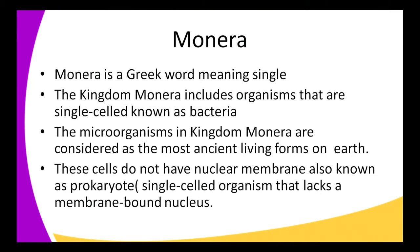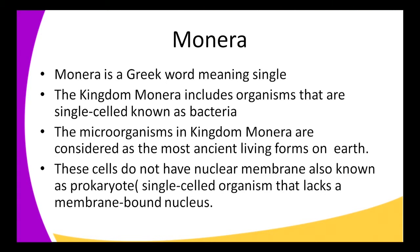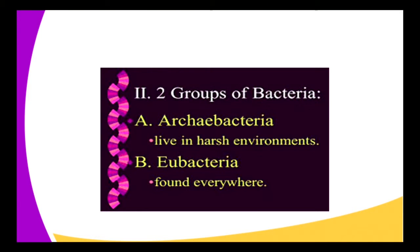The microorganisms in Kingdom Monera are considered the most ancient living forms on Earth. These cells do not have a nuclear membrane — they are also known as prokaryotes, a Greek word meaning single-celled organisms that lack a membrane-bound nucleus and mitochondria. Prokaryotes, also known as moneras, do not have membrane-bound organelles in their cells.